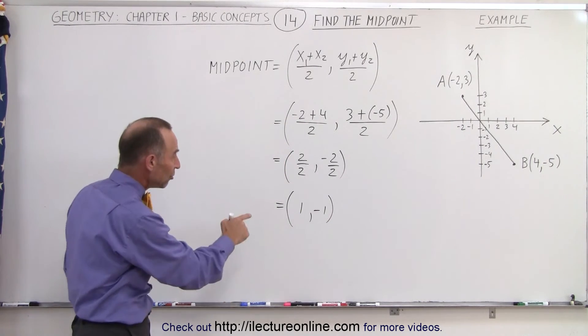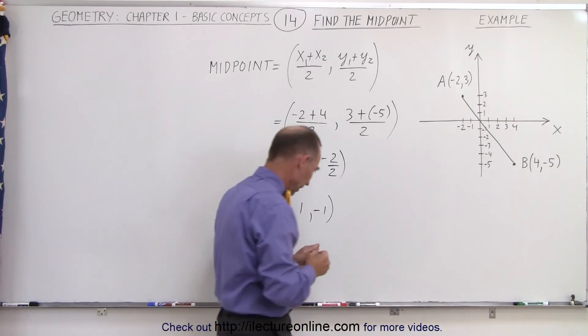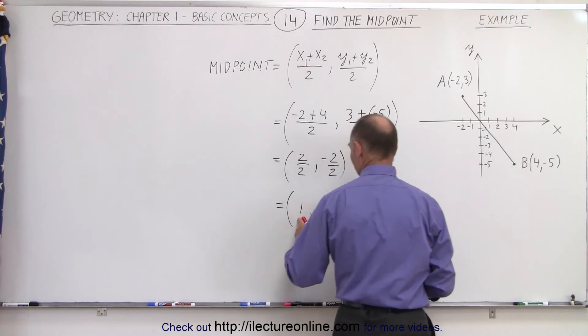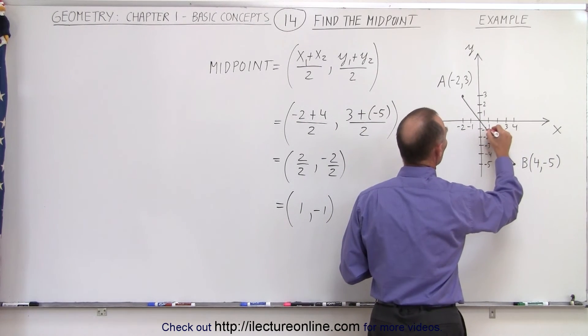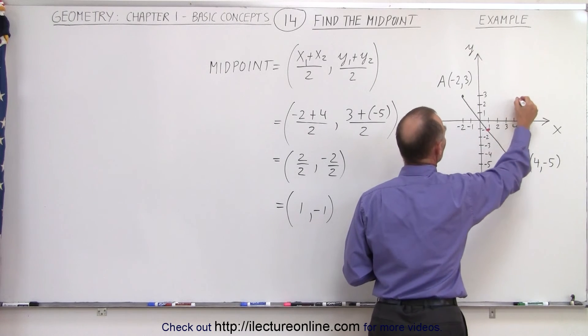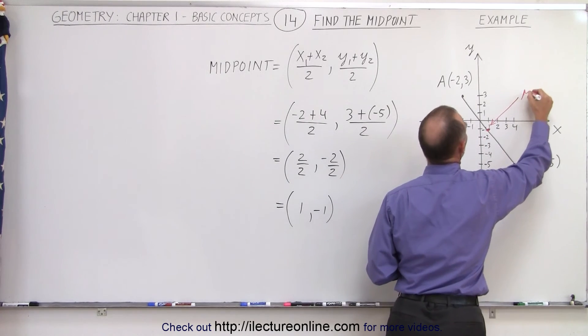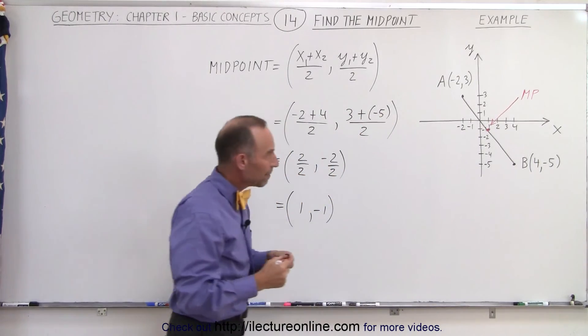So that will be the location of the midpoint. Let's find out where that is. So the x coordinate is 1 and the y coordinate is negative 1. So that puts it right about there. And so here is our midpoint on the line from A to B.